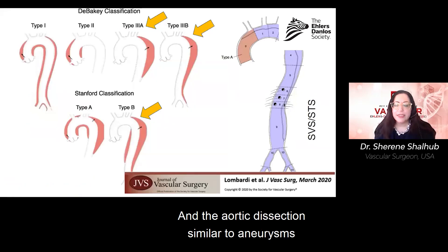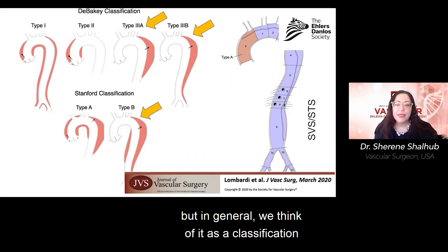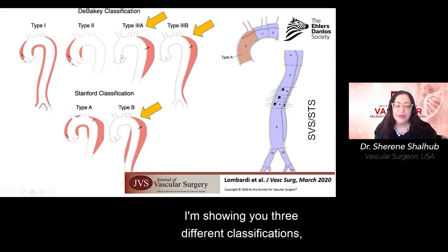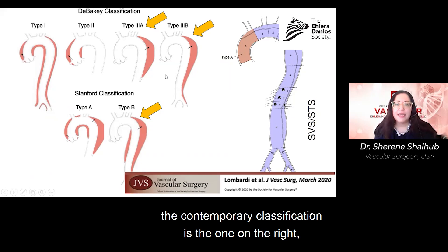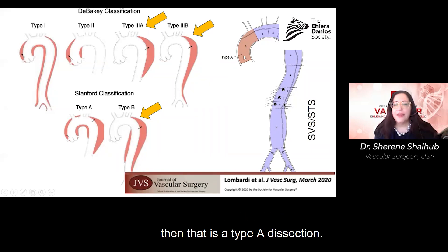Aortic dissection, similar to aneurysms, can happen in any part of the aorta. In general, we classify it as type A and type B. I'm showing three different classifications. The contemporary classification on the right states that if the dissection is in the ascending aorta, that is a type A dissection.